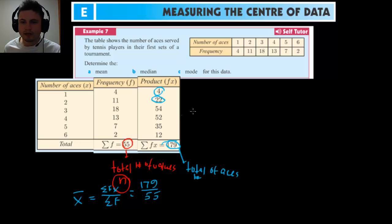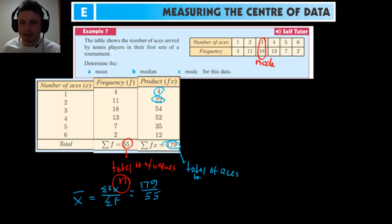To find the mode, we just look at the frequency table and identify the most frequently appearing number — that right there is the mode.